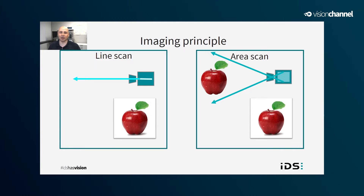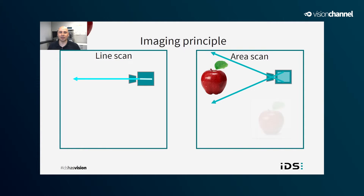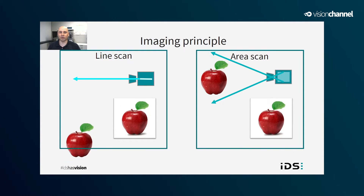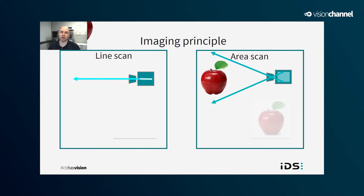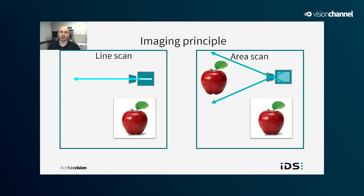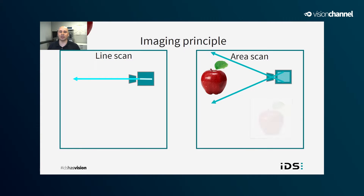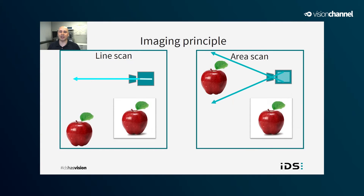Line scan imaging, on the other hand, uses a linear sensor array. This is usually one or two rows of pixels but thousands of pixels wide — a very wide aspect ratio. Instead of capturing the subject in a single snapshot, it scans the subject one line at a time, putting those lines together and integrating them to form the complete image data.